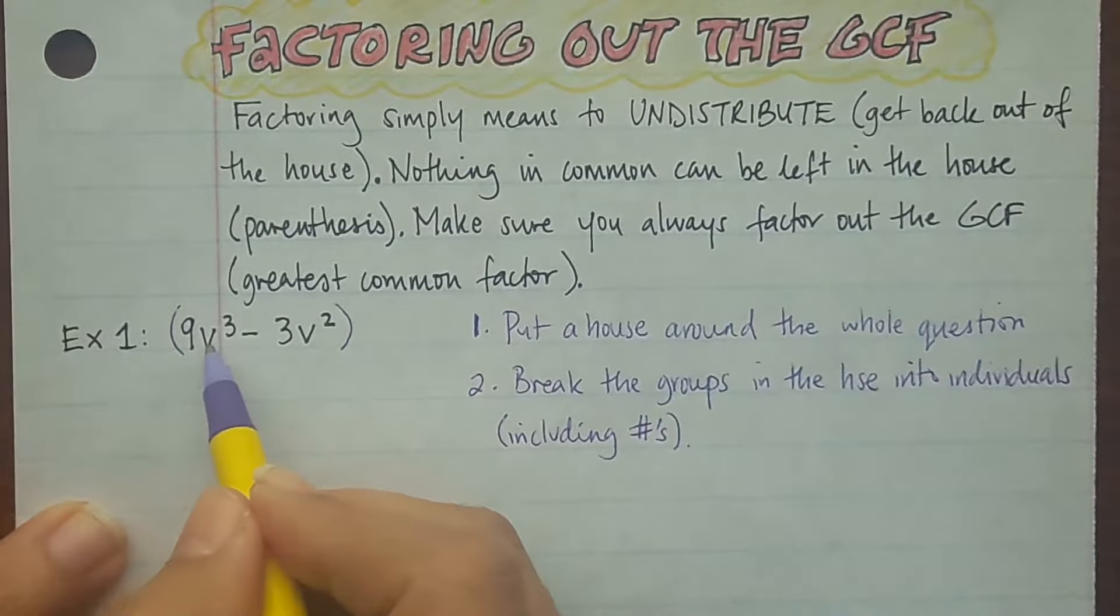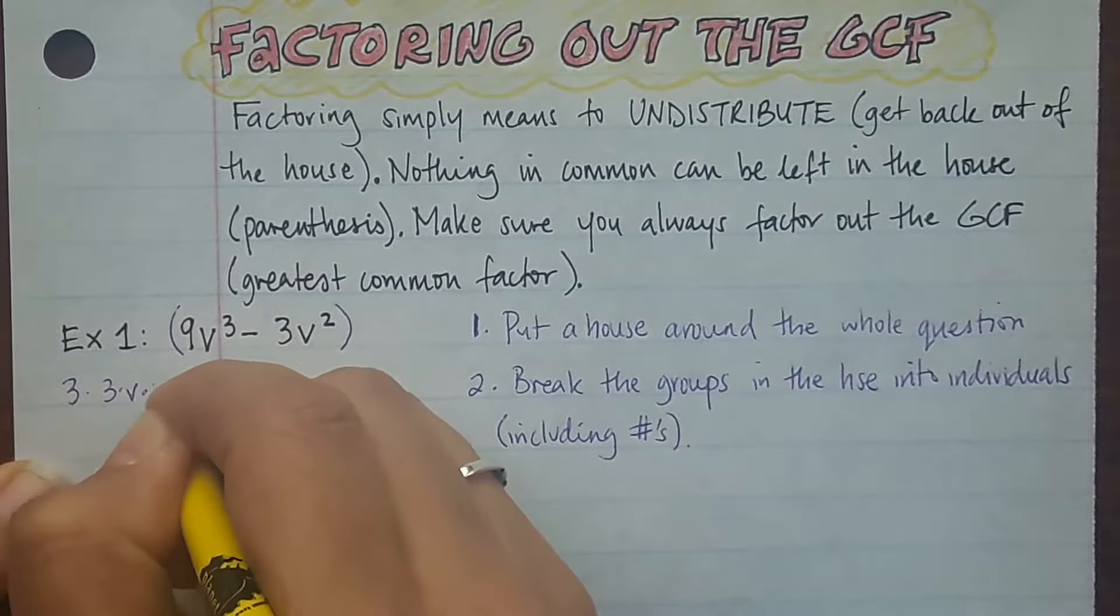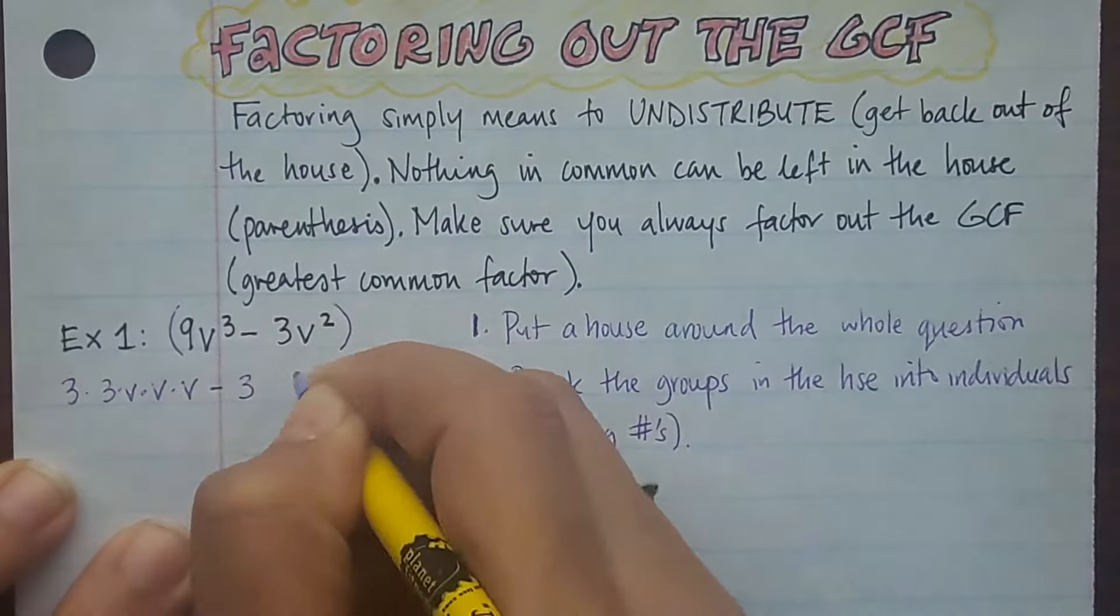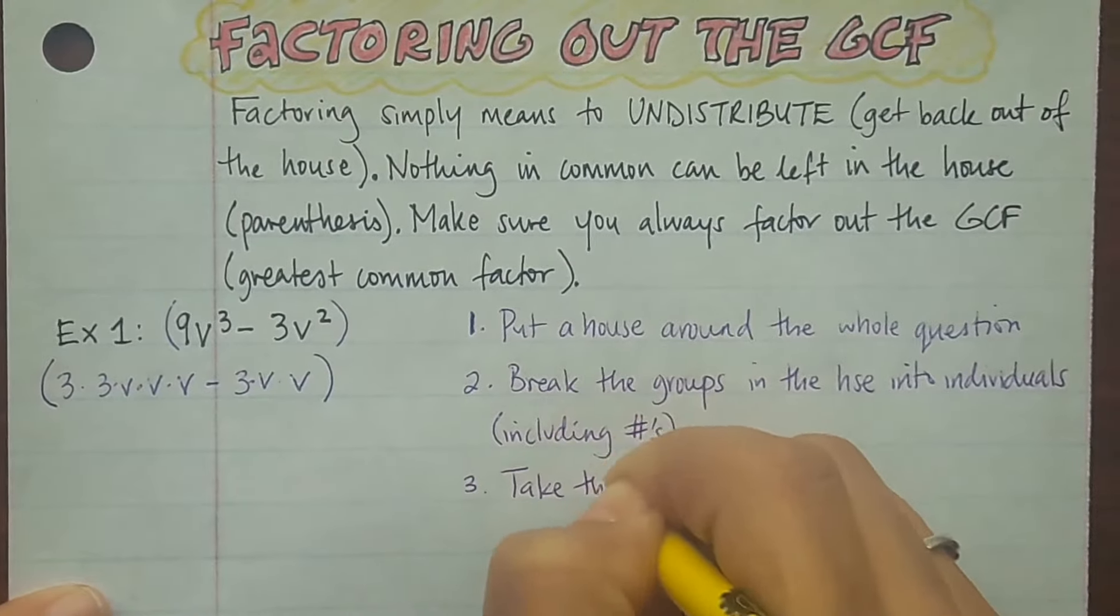So 9 breaks up into what? 9 is 3 times 3 in its simplest form, and then those are 3 v's. Minus 3 can break down, and then 2 v's. So now I've broken up the groups into individuals.